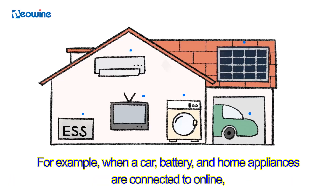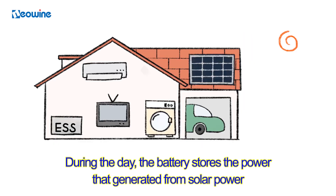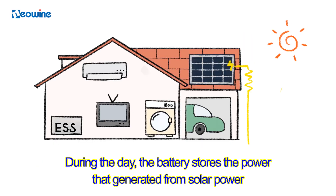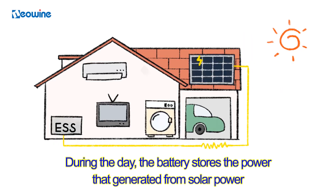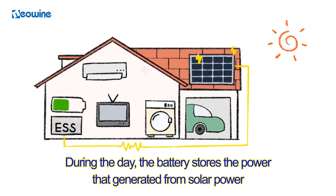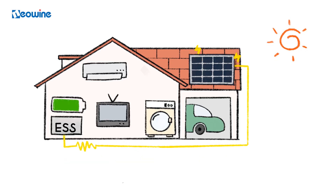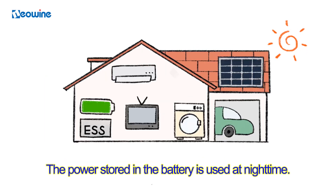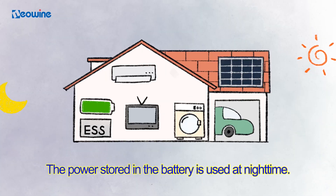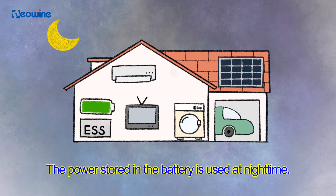For example, when a car battery and home appliances are connected online. During the day, the battery stores the power generated from solar power. The power stored in the battery is then used at night time.